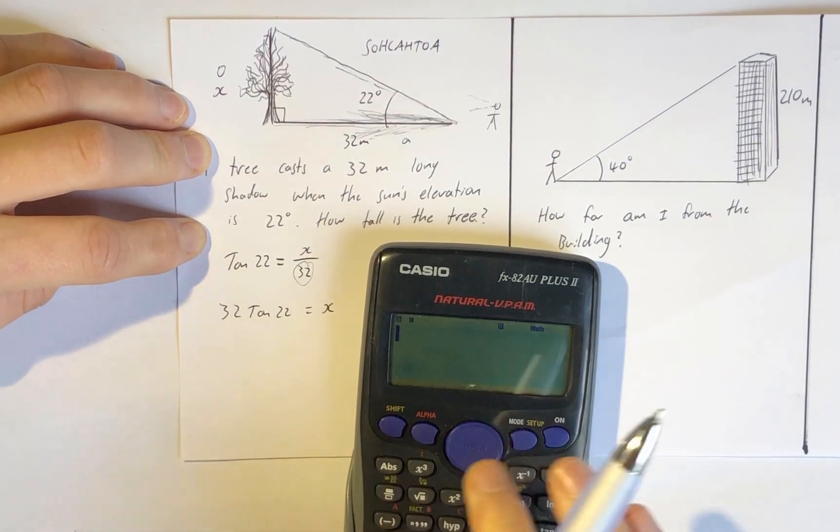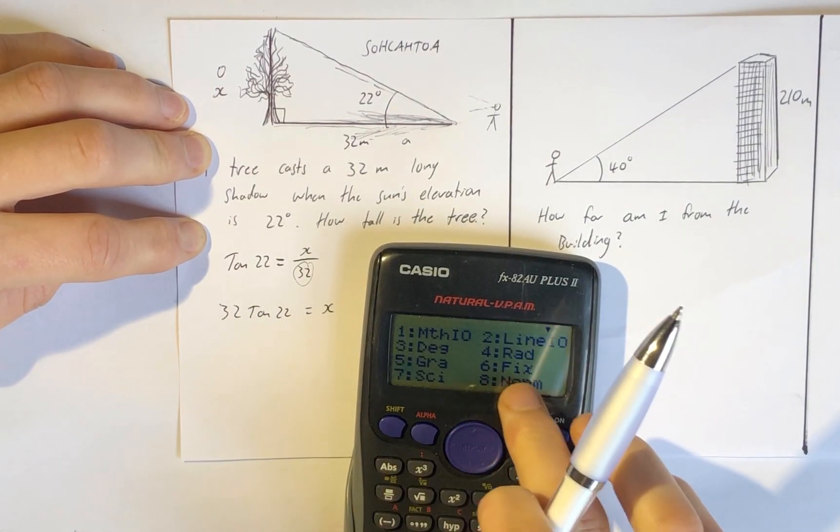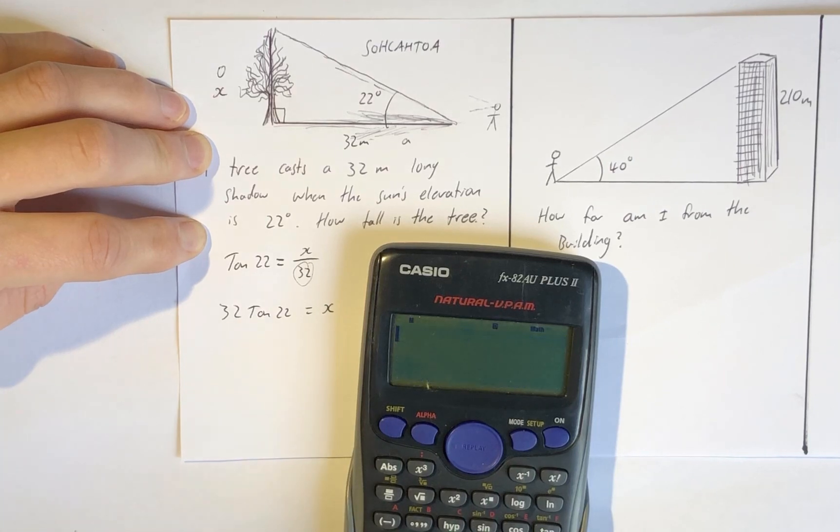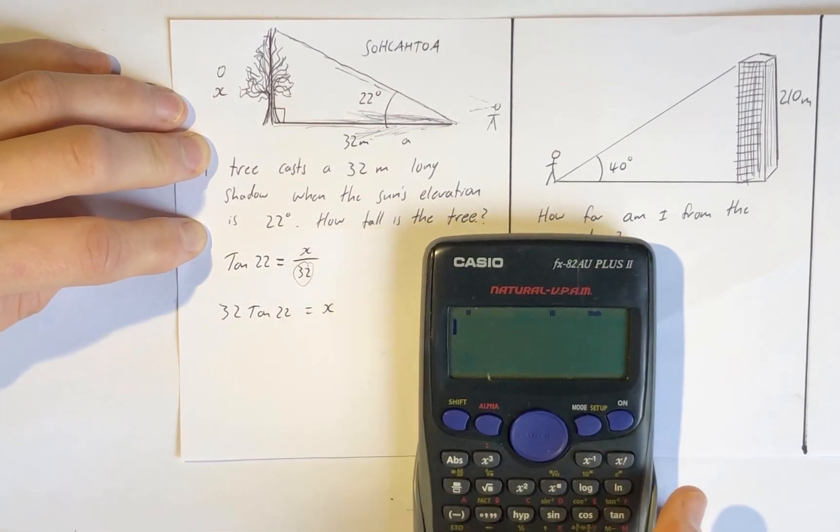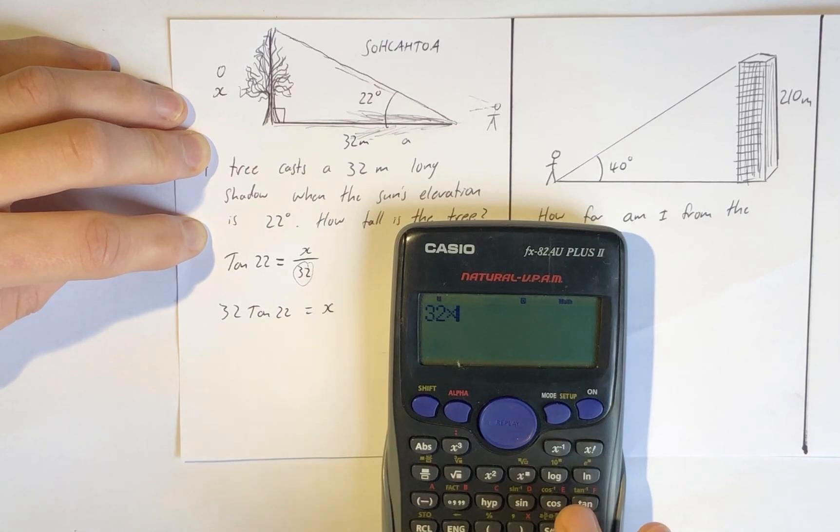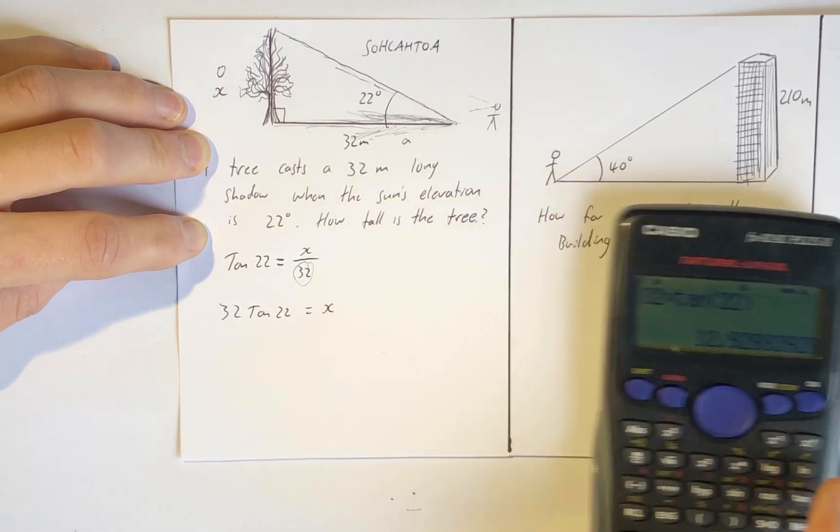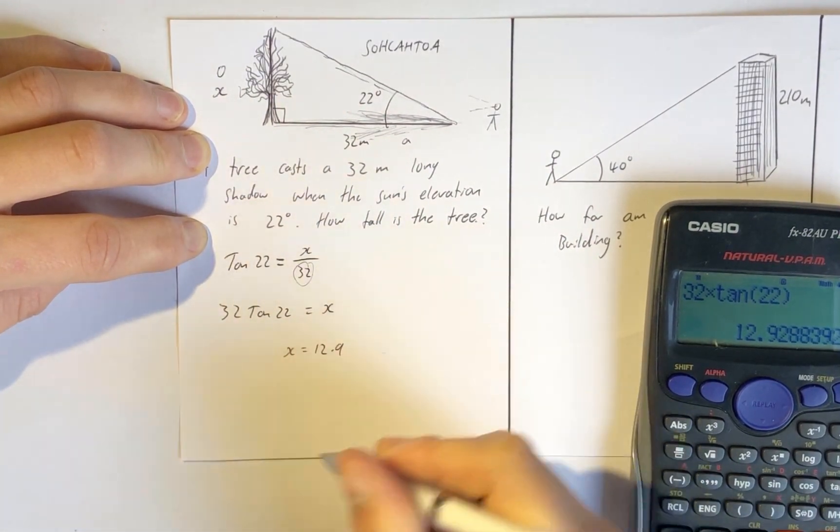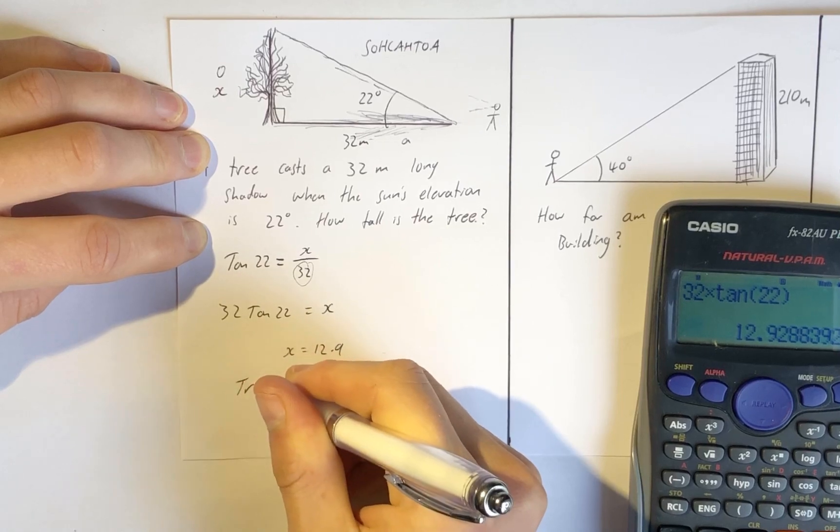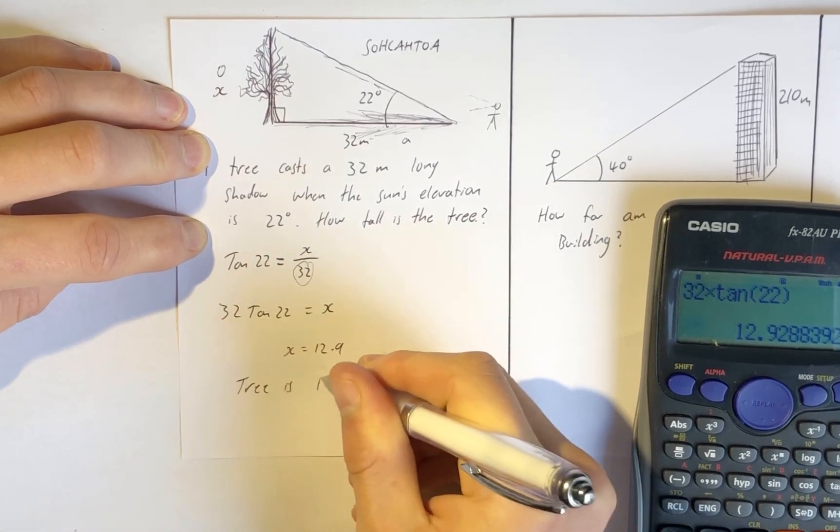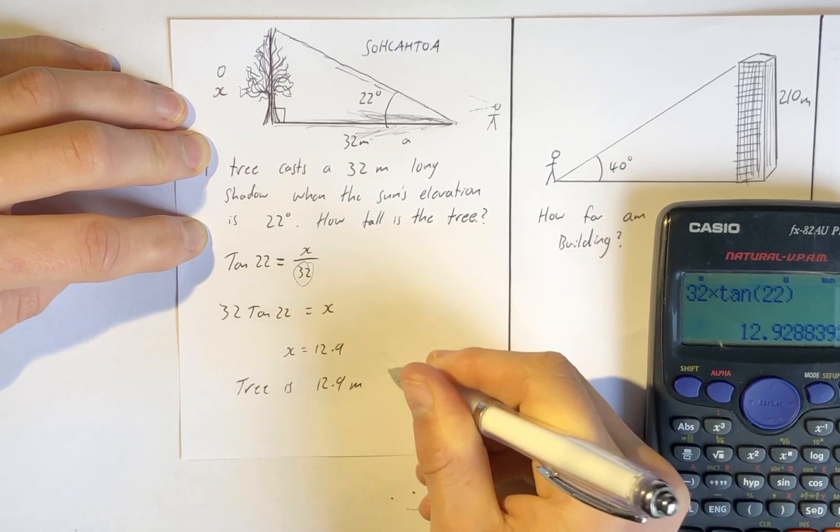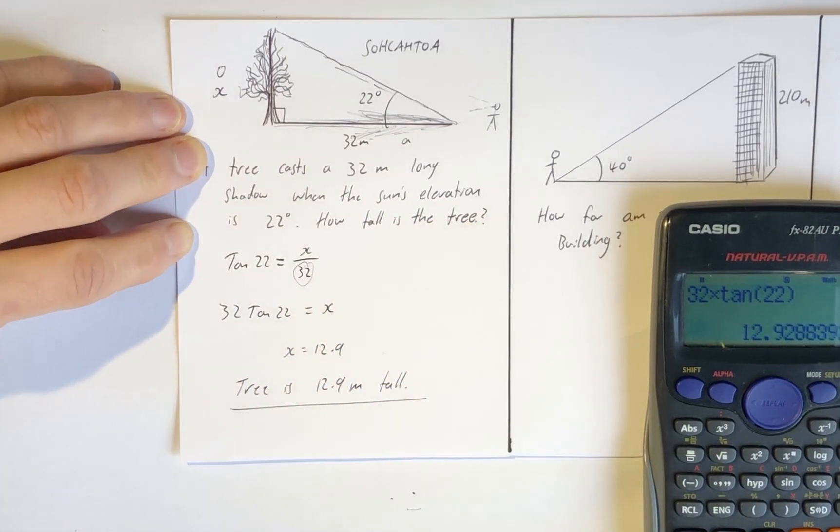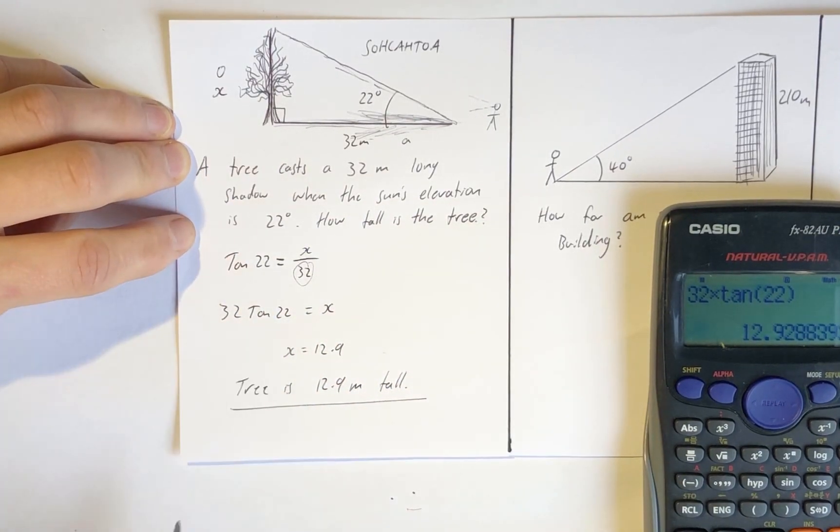I get my calculator and make sure it's in degrees. I go shift mode and put it into degrees. That is now 32 times tan 22 degrees and I get 12.9. So x equals 12.9 and I answer in context: tree is 12.9 meters tall. That is my answer using right angle trig.